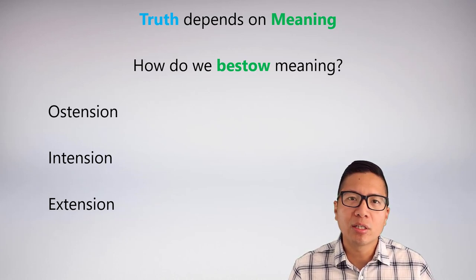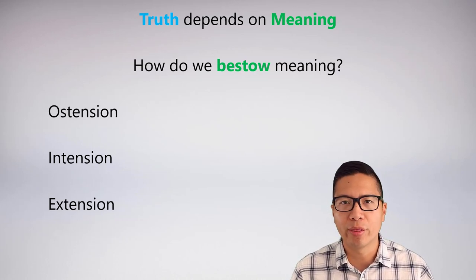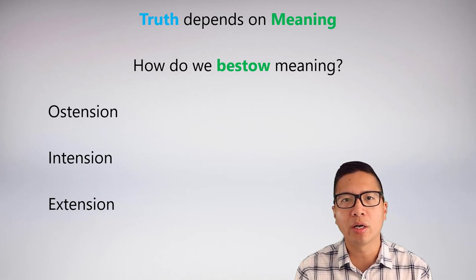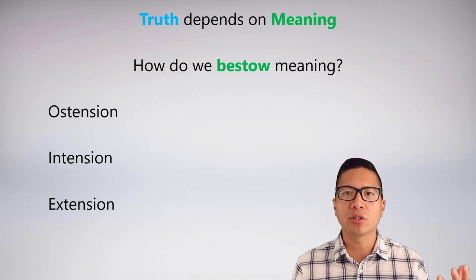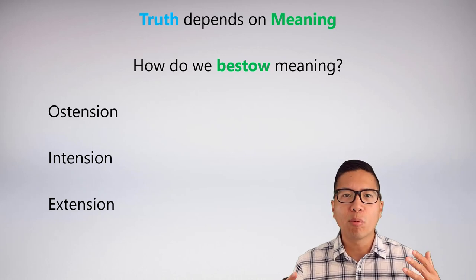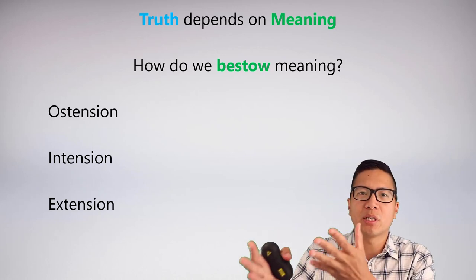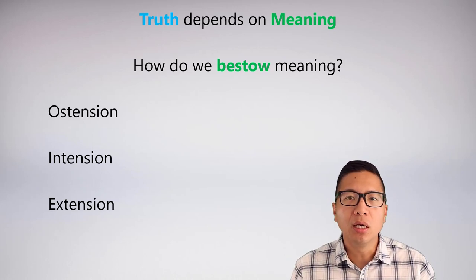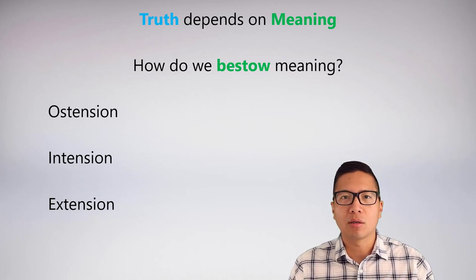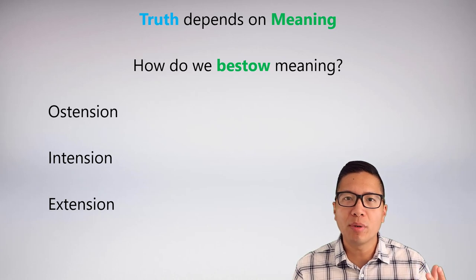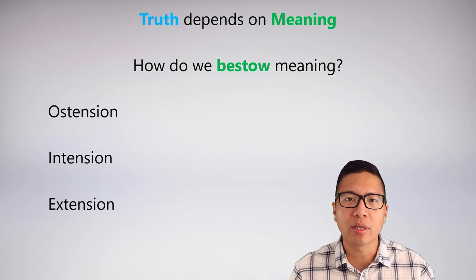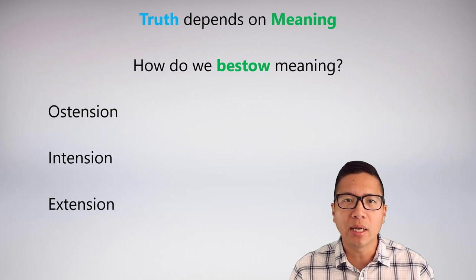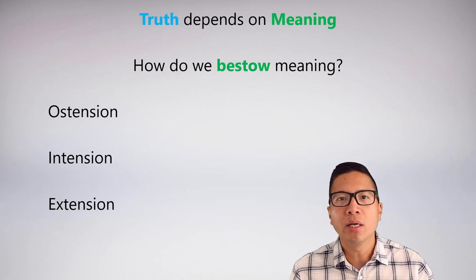So we have to understand how it is that we can bestow meaning upon things, because that's what we're going to do a lot in this section. We're going to look at certain statements and say, okay, I want this to mean this, or I'm going to pretend this means that. So how does one bestow meaning? There's three generally accepted ways to bestow meaning—ostention, intension, and extension.